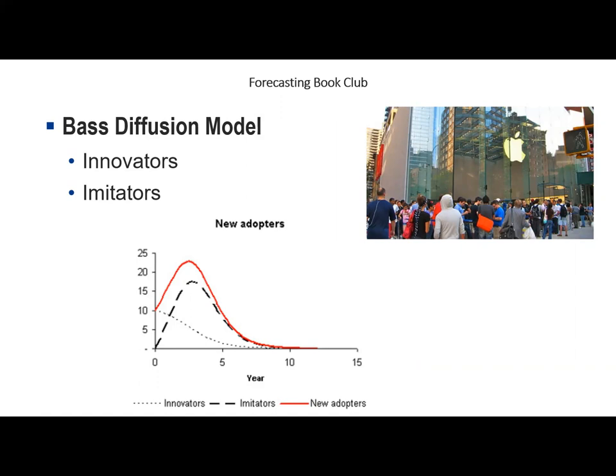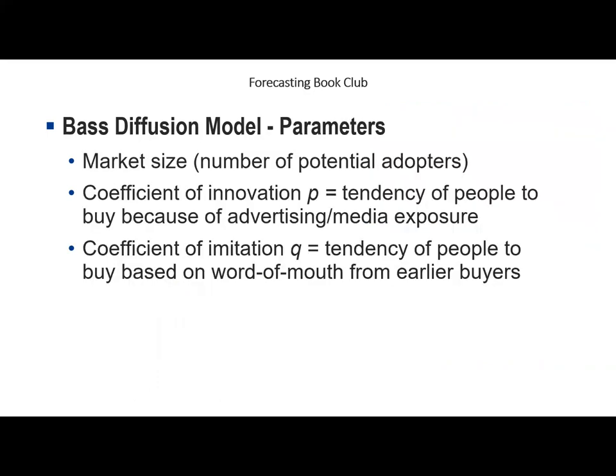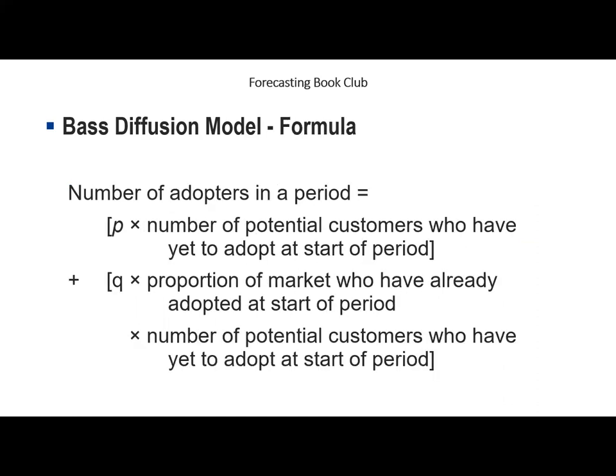To run a Bass model you need estimates of three things: the market size — the total number of potential adopters — and two parameters P and Q, both ranging between zero and one. P is the coefficient of innovation, representing the tendency to buy due to advertising and media exposure. Q is the coefficient of imitation, representing word-of-mouth influence, which grows stronger as more people adopt. Eventually, adopters approach the market saturation point and adoption slows. The model's computation is based on parameters P and Q derived from the total market size.